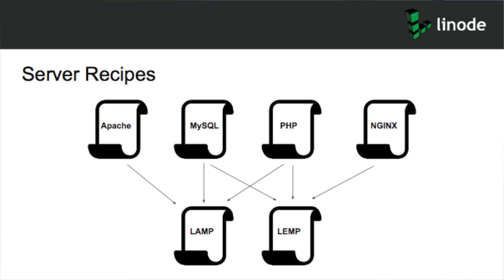With a modular approach, it's almost like recipes for servers. A LAMP Stack is Linux, Apache, MySQL, and PHP — simple technologies you'd see on most web servers. Instead of one Stack Script that does everything for a LAMP server, you could have a Stack Script that installs Apache, one that installs MySQL, and one that installs PHP. Then your LAMP Stack Script simply says: include Apache Stack Script, include MySQL Stack Script, include PHP Stack Script — and that's it. Your LAMP Stack Script is now only three lines of code.